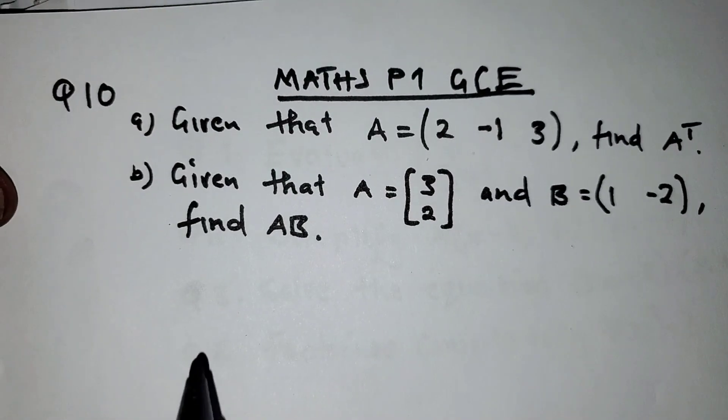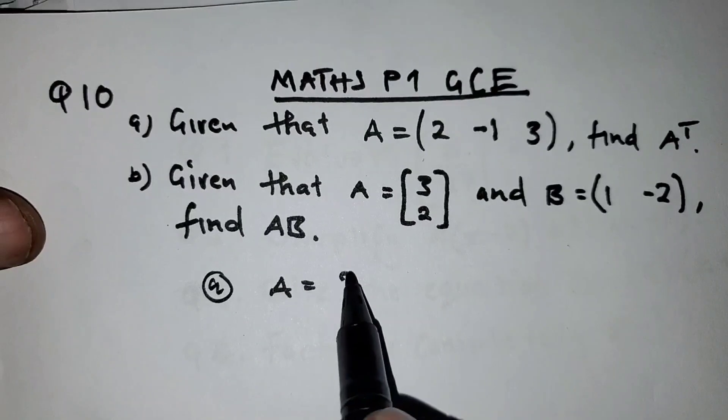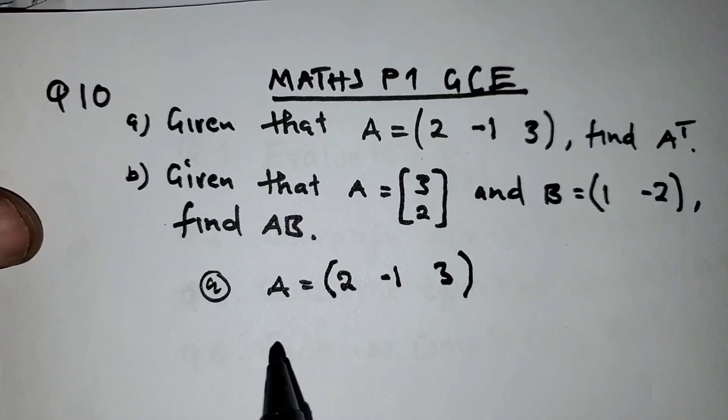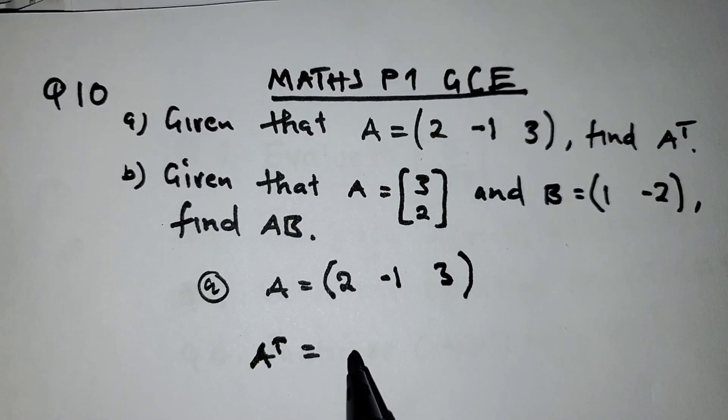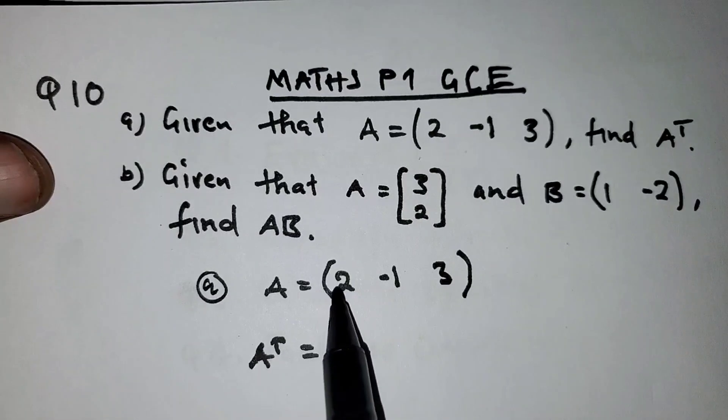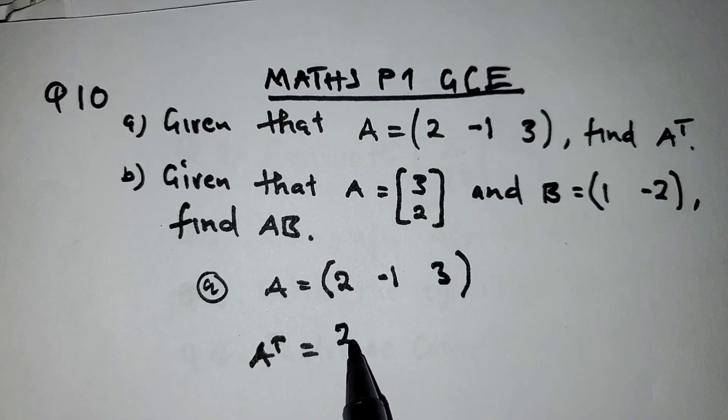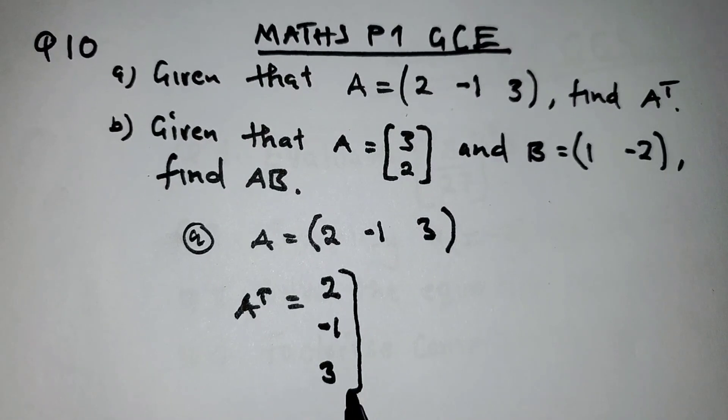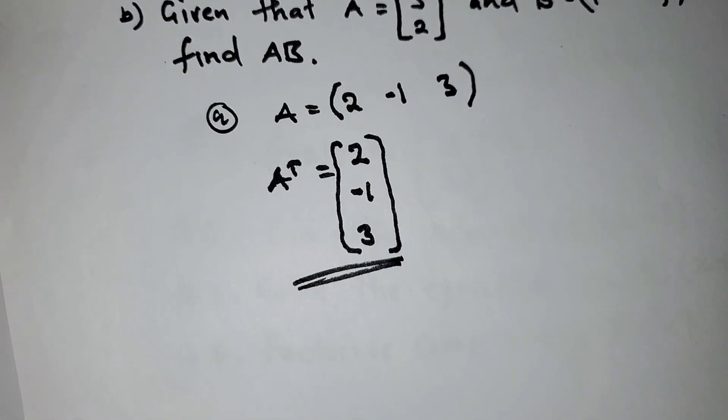For question A, we're going to write matrix A, which is (2, -1, 3). Then the transpose of a matrix means the rows become columns. This first row becomes the first column, so it will be 2, -1, 3. That's why it says one mark. It's very simple. This is the answer.